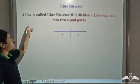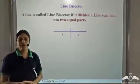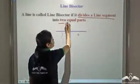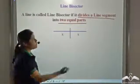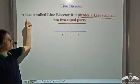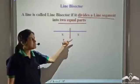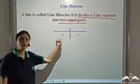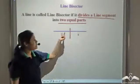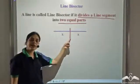A line bisector is a line which divides a line segment into two equal parts. It could be a line as well as a line segment. This line segment divides this line segment into two equal parts; the length of each part is x. Hence this is a line bisector.